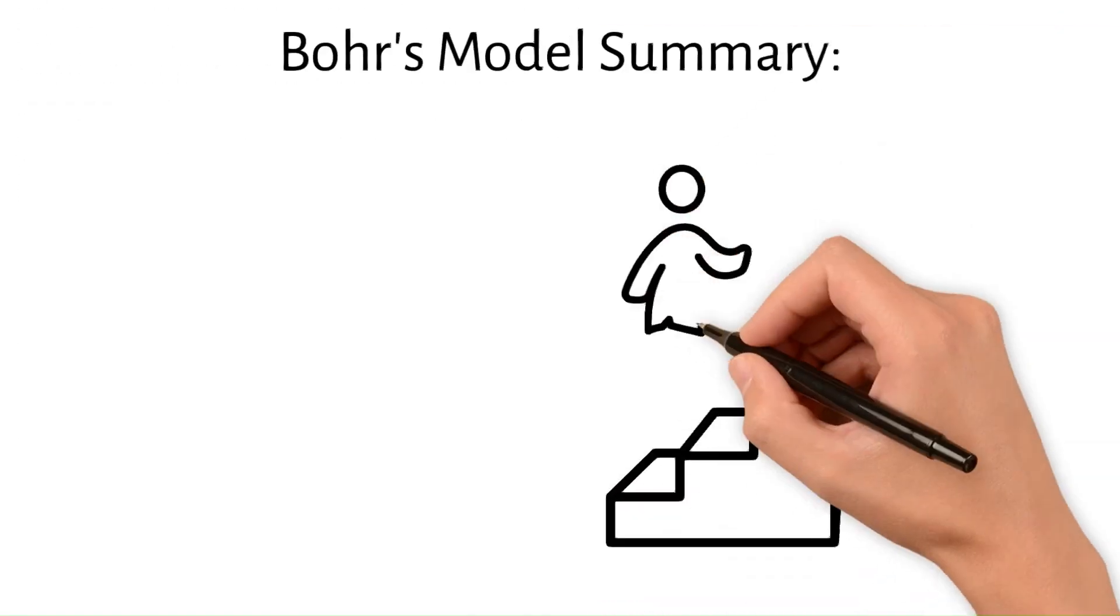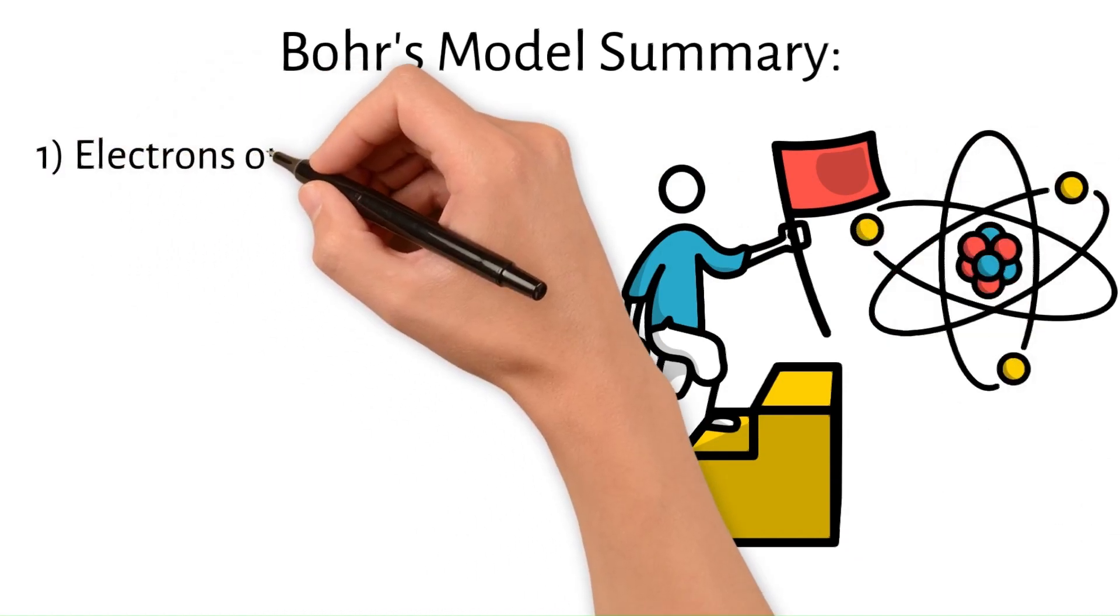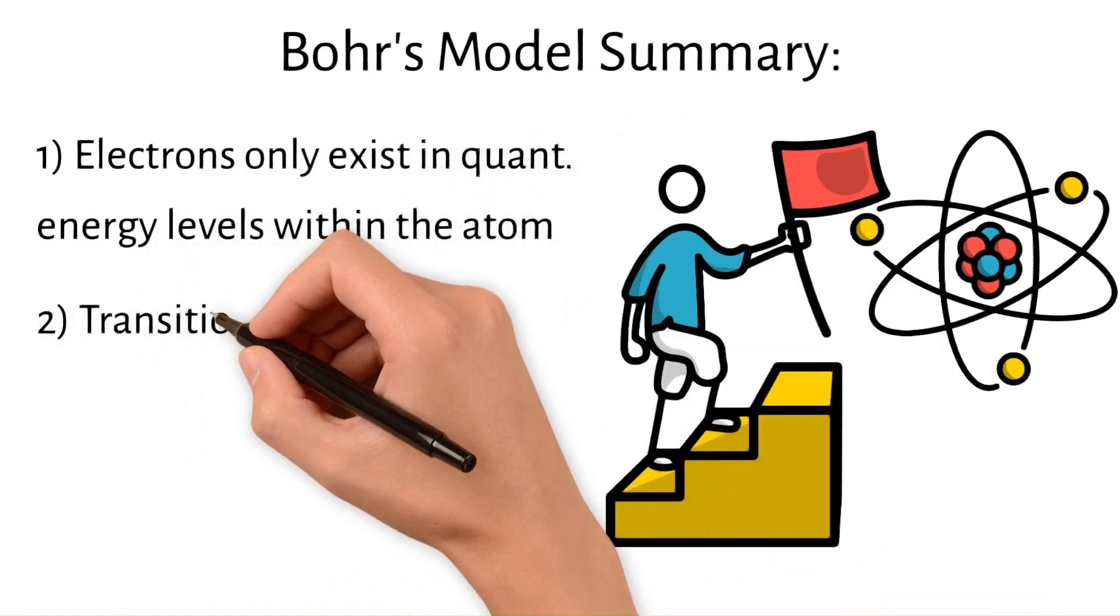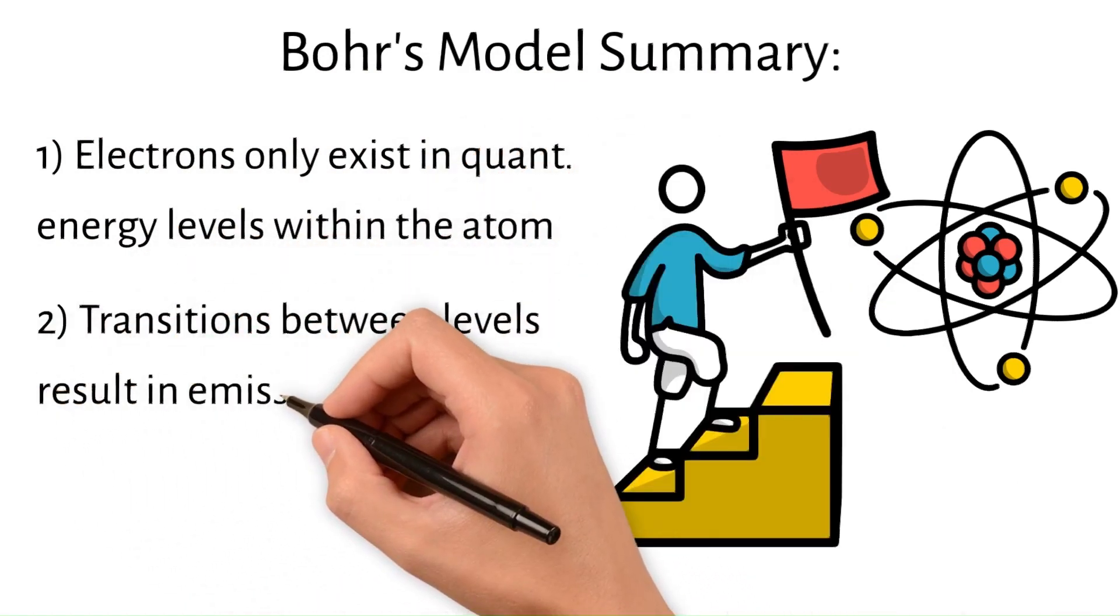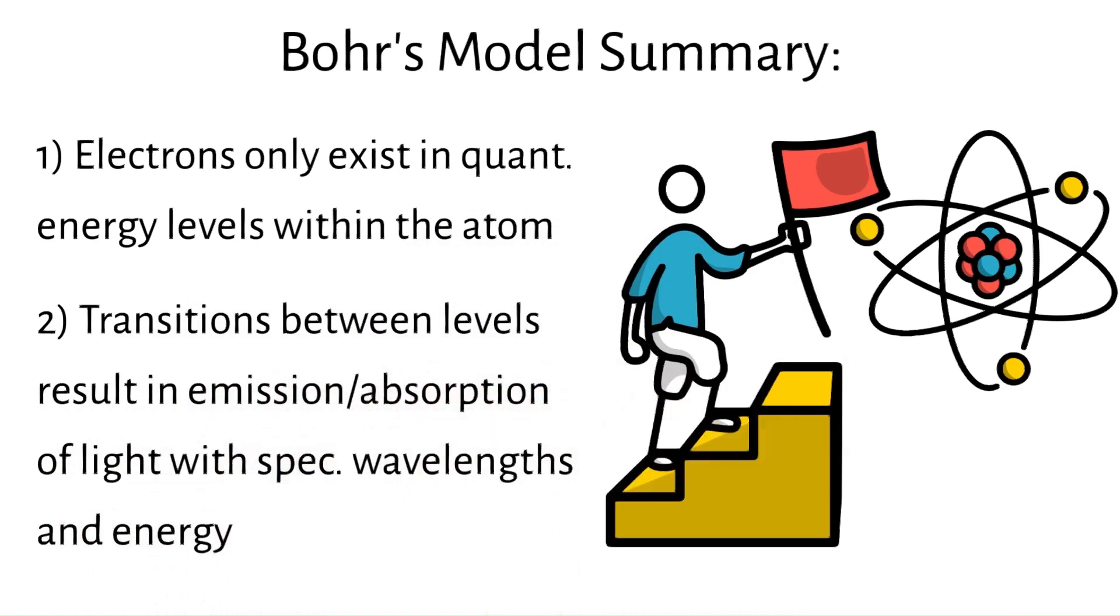In summary, Bohr's model was an important step in the development of a comprehensive model of an atom. Its most significant contributions were that electrons only exist in quantized energy levels within the atom, and the transitions between these levels result in the emission or absorption of light with specific wavelengths and energy. This was a major step forward in understanding atomic structure and the origins of spectral lines, laying the groundwork for quantum mechanics.